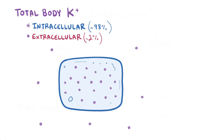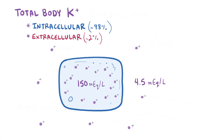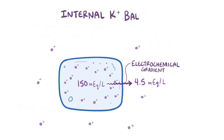The concentration of potassium inside the cells is about 150 milliequivalents per liter, whereas outside the cell it's only about 4.5 milliequivalents per liter. Since potassium ions carry a charge, this difference in concentration also leads to a difference in charge, establishing an overall electrochemical gradient across the cell membrane. This is called the internal potassium balance.